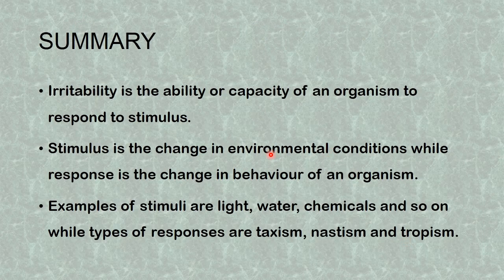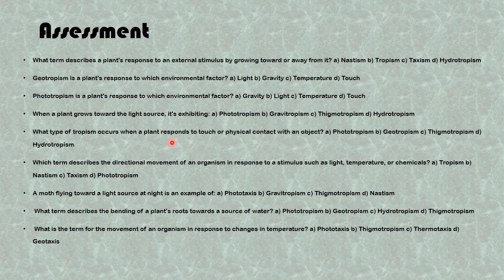This brings us to the end of today's lesson. In summary: irritability is the ability or capacity of an organism to respond to a stimulus. Stimulus is the change in environmental conditions, while response is the change in behavior of an organism as a result of a stimulus. Examples of stimuli are light, water, chemicals, and so on. The types of responses are taxism, nastic movement, and tropism.